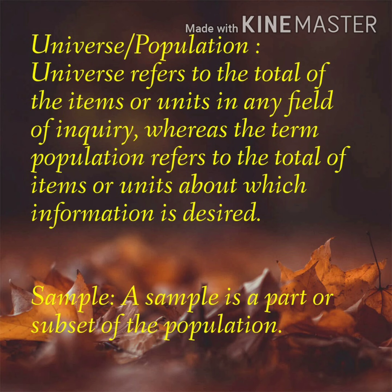For example, the population of a city, the number of workers in a factory, etc. Generally, capital N is symbolized as the total number of a finite population. On the other hand, an infinite population is one in which it is theoretically impossible to observe all the elements — the number of items is infinite, meaning we cannot have any idea about the total number of items. For example, the number of stars in the sky.